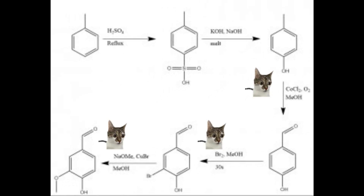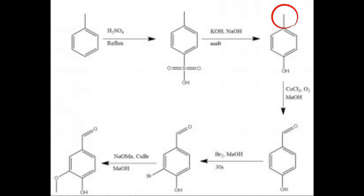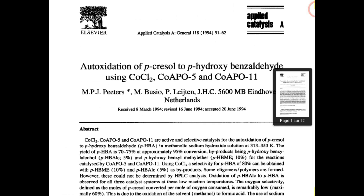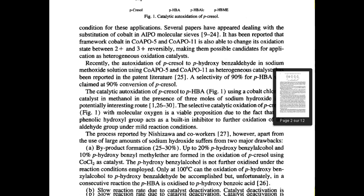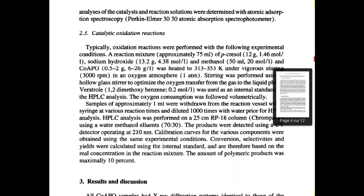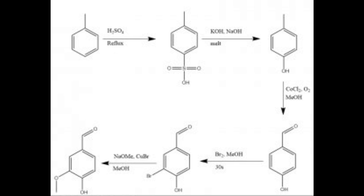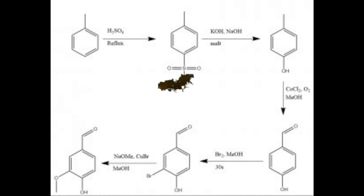And then we get to the difficult parts, which are the last three steps. In the third step, we're going to try to oxidize the methyl group on the para-cresol, following a paper from 1994. We will need less common reagents: the solvent is methanol, which I have, but then we need cobalt chloride as a catalyst and oxygen as another reagent. For oxygen, I can just use the air, so that's fine, but I don't have cobalt chloride available. So we'll have to make it from batteries.